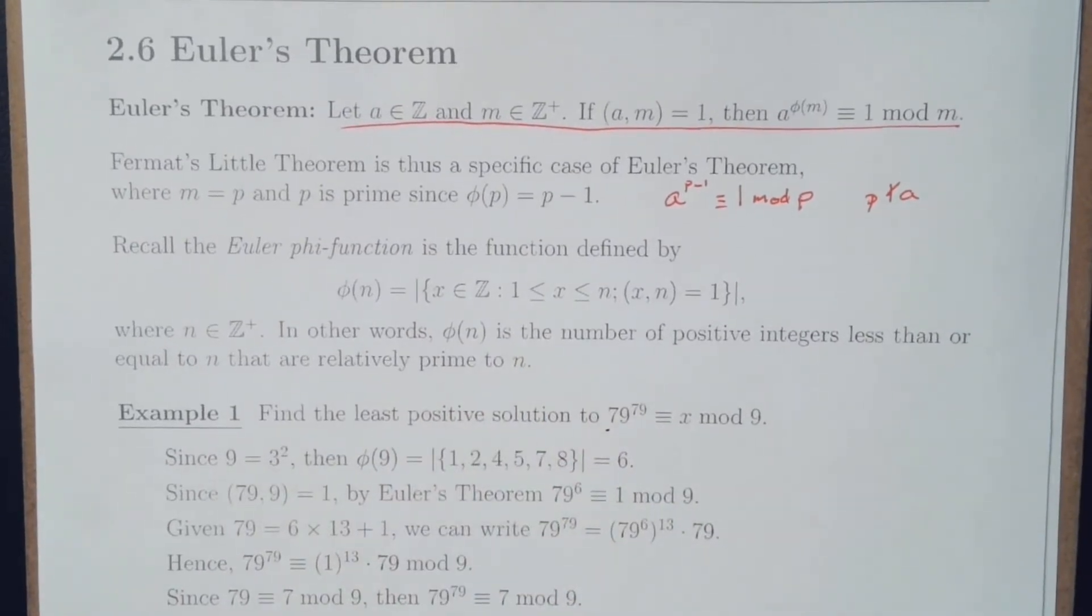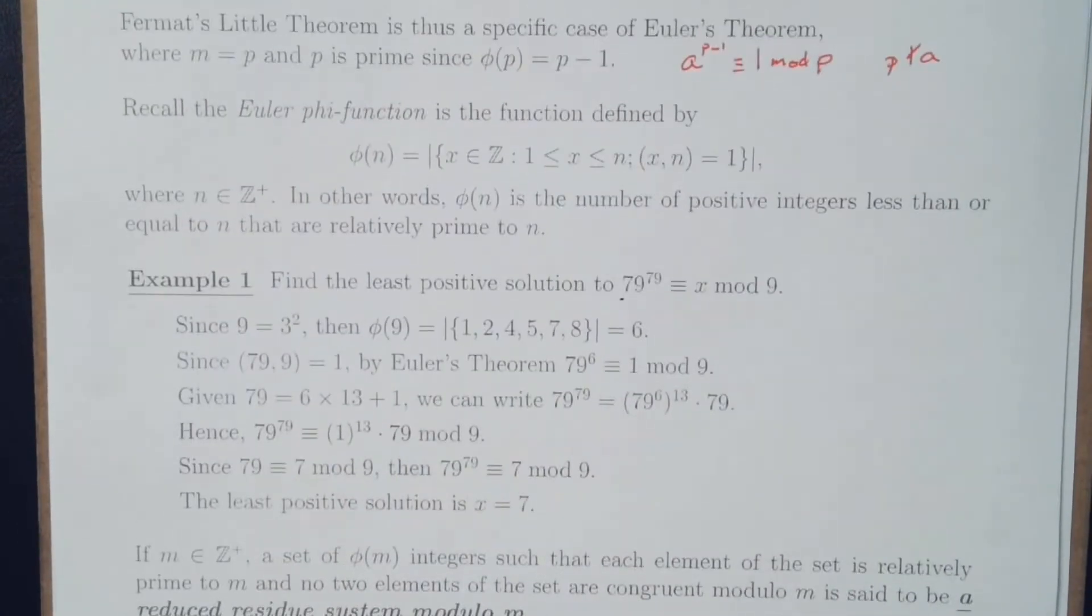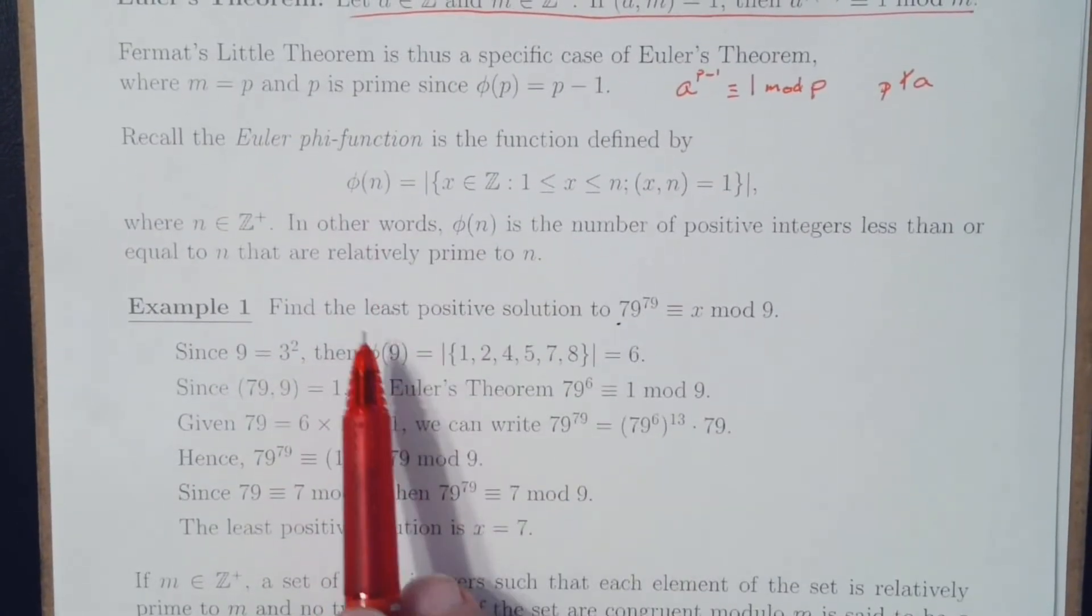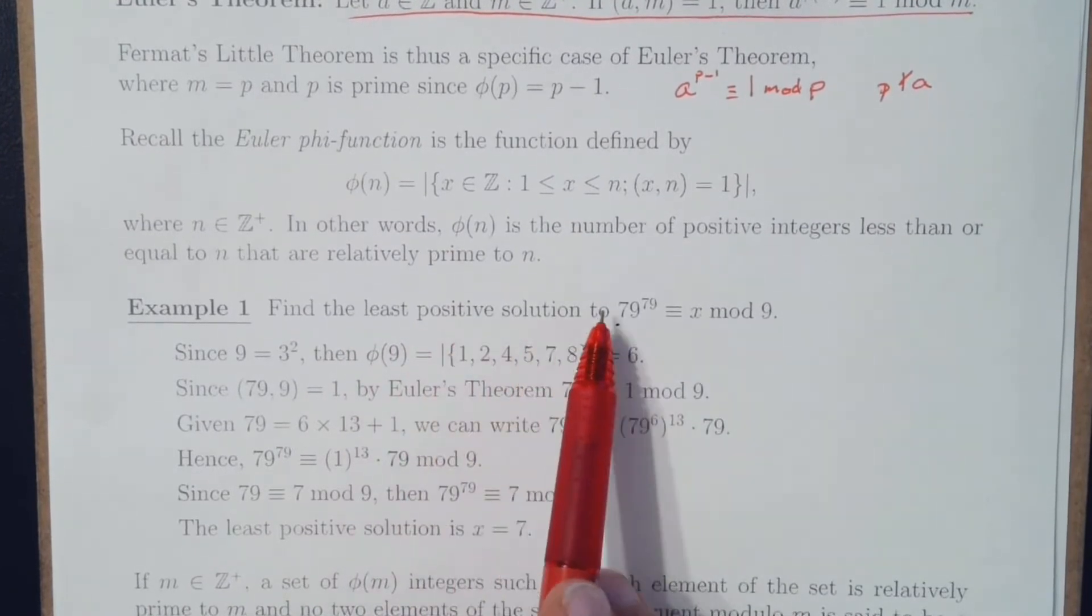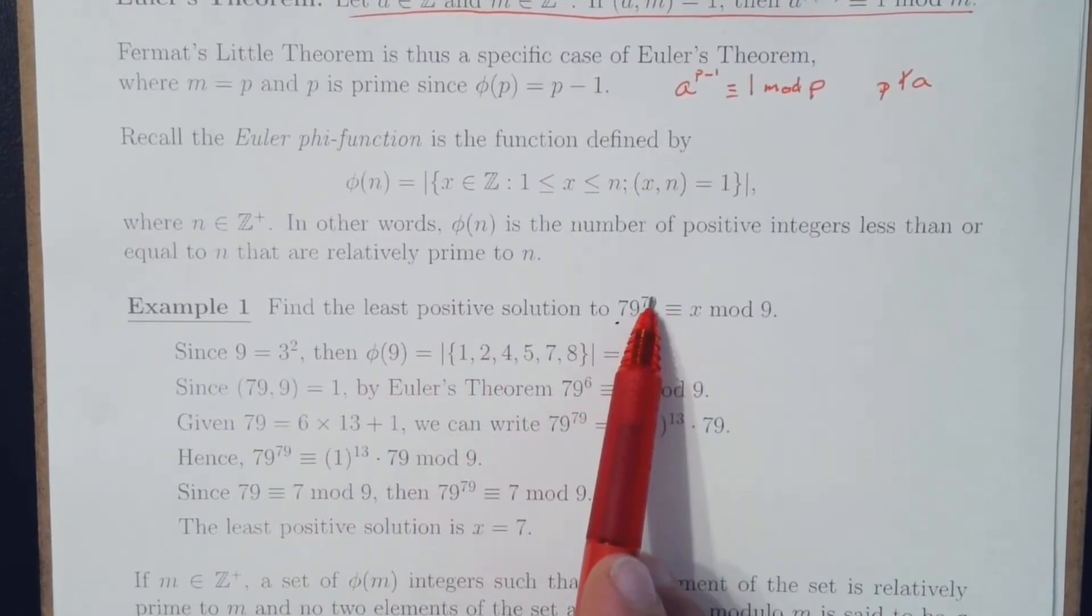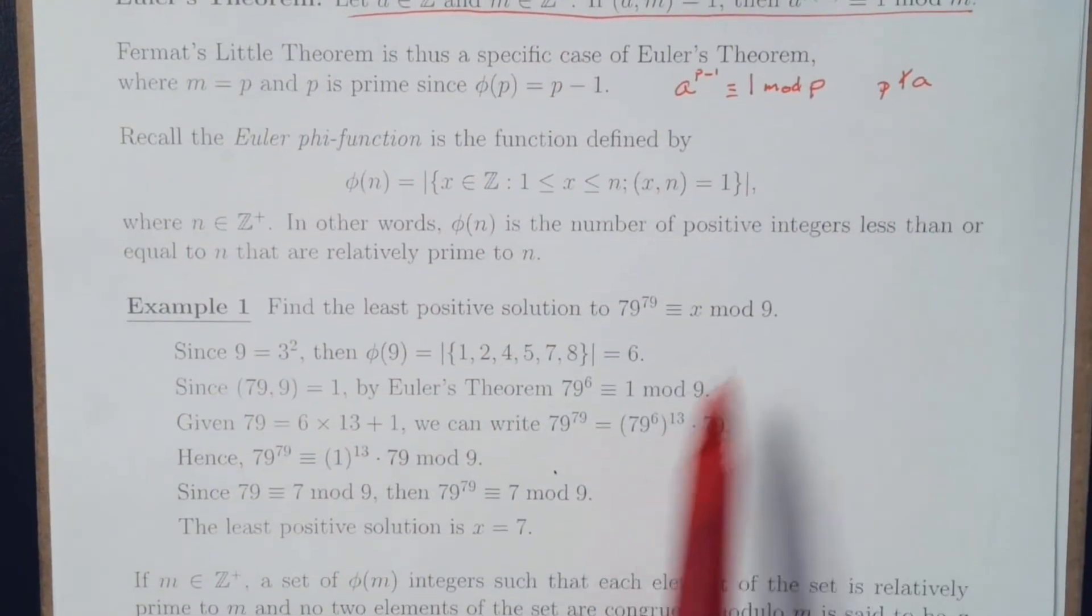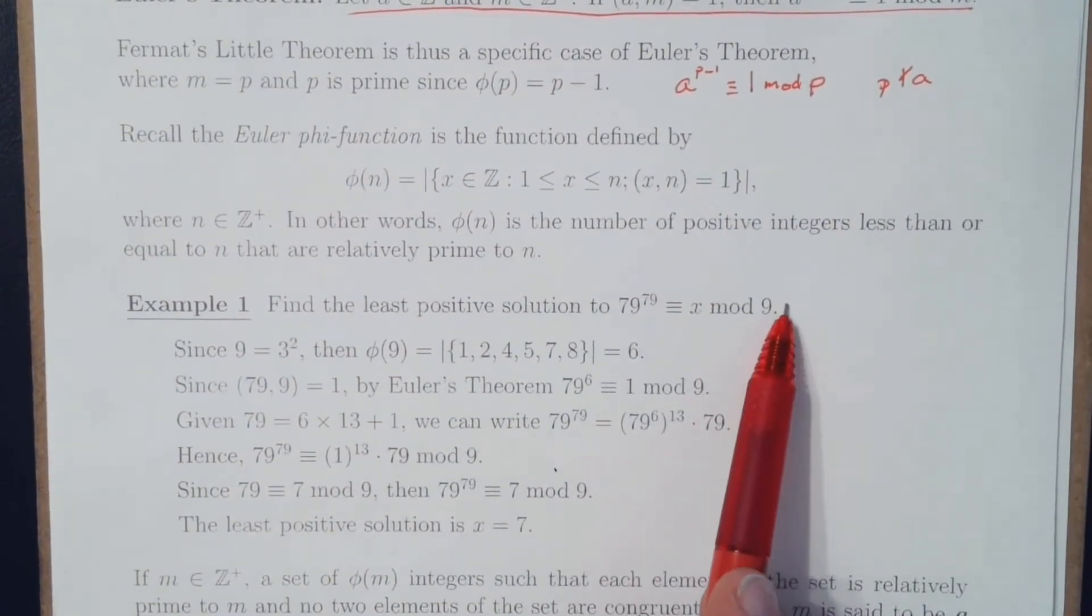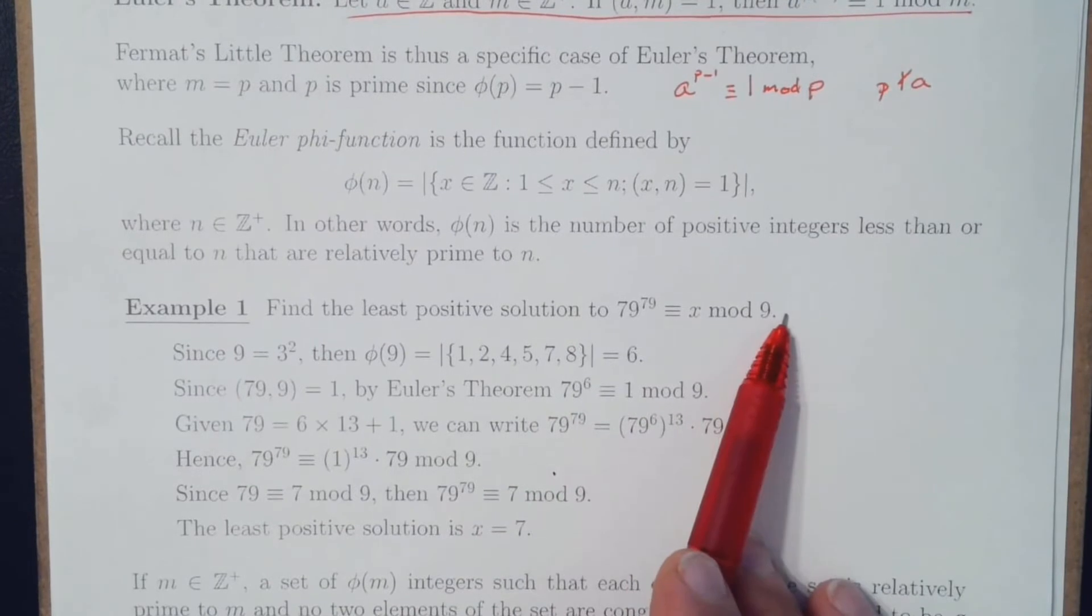So, at this point, let's look at a short example. If we want to find the least positive solution to 79 to the 79th is equivalent to x mod 9, what we have to do is think about how we can work with what we have.